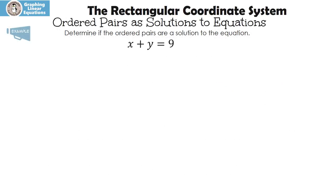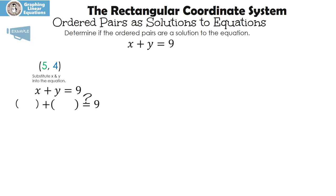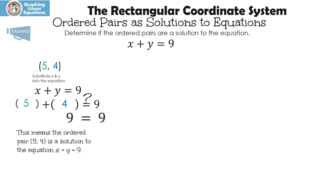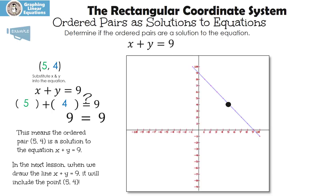We're going to determine if the ordered pairs are a solution to the equation. Let's see if five, four works. Remember, five is the x and four is the y. We're going to substitute the x and y into the equation. I put parentheses around my variables, with a question mark above the equal sign because we're not sure it equals yet. Five plus four is nine, and nine equals nine. This means the ordered pair five, four is a solution to the equation x plus y equals nine. In the next lesson, we will draw the line x plus y equals nine and it will include the point five, four, because it makes the equation true.